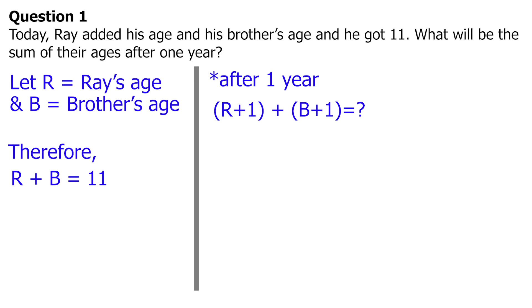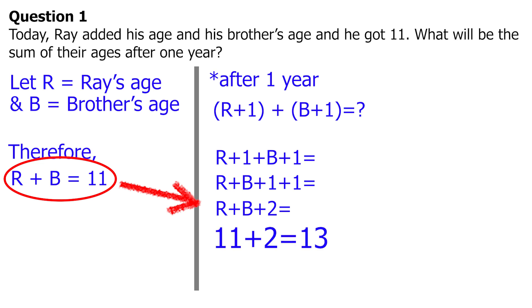Next, expand and simplify. We will now have R plus 1 plus B plus 1. Then combine like terms: R plus B plus 1 plus 1. 1 plus 1 is 2, so R plus B plus 2. From our given equation, R plus B is equal to 11. Substitute, and we will have 11 plus 2 equals 13. So the answer is 13.